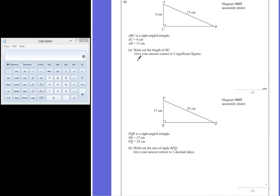So to find the length of CB, which I'm going to call in this case CB squared, is equal to the hypotenuse squared. So 13 squared, take away 6 squared. 13 squared is 169. Take away 6 squared gives us an answer of 133.